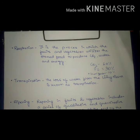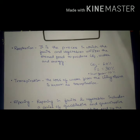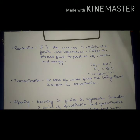Moving on to the next term, that is transpiration. Transpiration is the loss of water from the living tissue. Most fruits and vegetables contain a high percentage of water, and the loss of water from the tissue of fruits and vegetables is known as transpiration. Transpiration can cause shriveling, wilting, loss of weight, and poor quality of the fruit or vegetable. It can be reduced by lowering the air temperature and increasing the relative humidity.